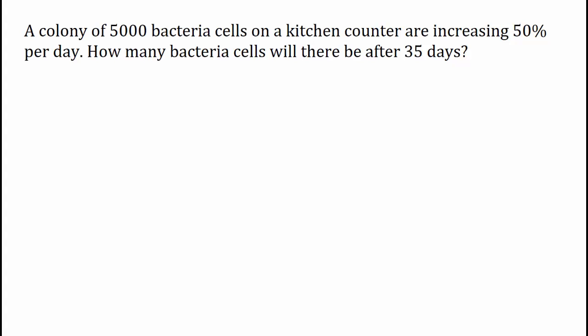Well, let's see, 50%, that's the same as .50. We're starting with 5,000 cells and adding 50% more each day. To see a convenient relationship here, let's go ahead and undistribute that 5,000. We call that factoring.